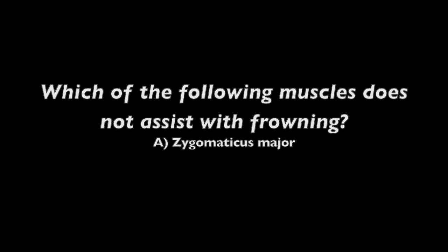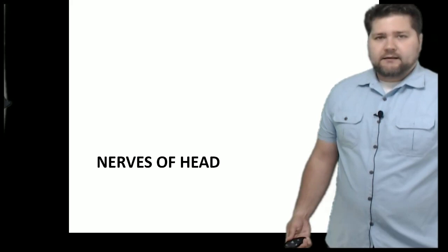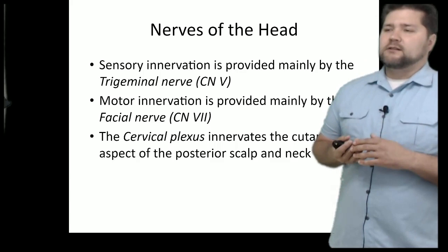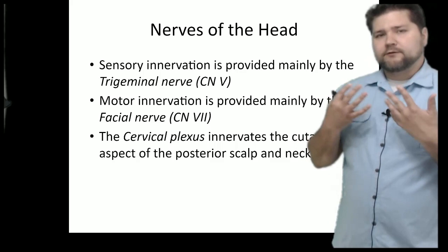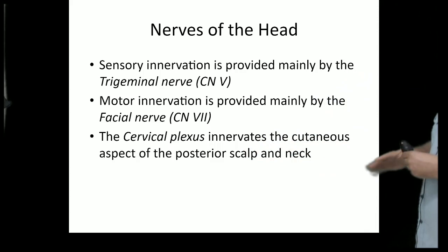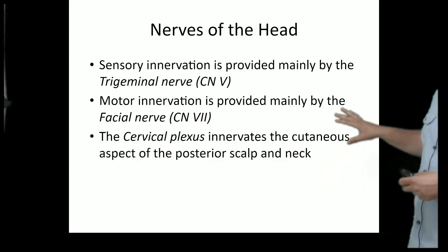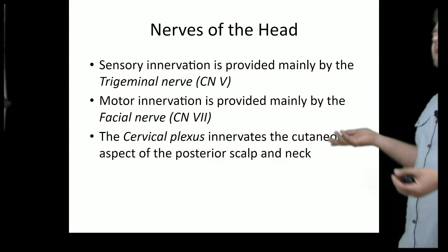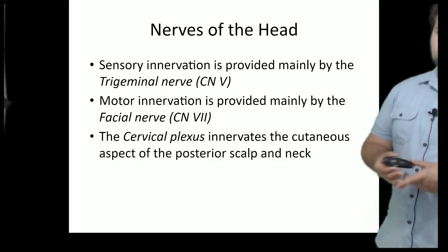Let's look at the nerves of the head. There are three primary nerve groups: the trigeminal nerve for main sensory innervation to the face, the facial nerve for motor innervation of the facial expression muscles, and the cervical plexus for sensory innervation to the back of the head. We'll start superficially and work our way deeper, and both the trigeminal and facial nerve will come up again in later lectures.